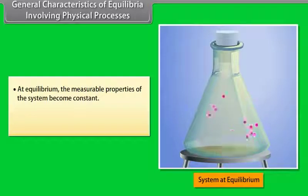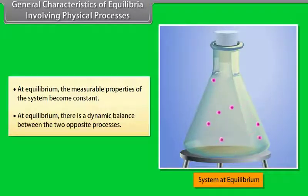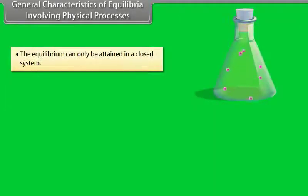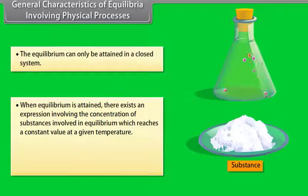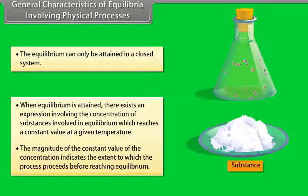General characteristics of equilibria involving physical processes: At equilibrium, the measurable properties of the system become constant, and there is a dynamic balance between the two opposite processes. Equilibrium can only be attained in a closed system. When equilibrium is attained, there exists an expression involving the concentrations of substances that reaches a constant value at a given temperature, and the magnitude of this constant indicates the extent to which the process proceeds before reaching equilibrium.